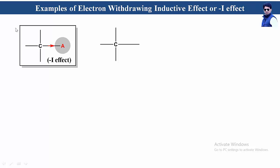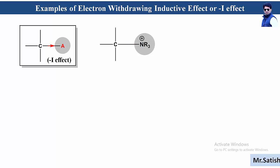This is the general presentation of the electron withdrawing inductive effect or minus I effect. As an example, replacing atom A with NR₃⁺, an ammonium salt, the flow of electrons occurs from carbon towards nitrogen. When this N⁺ withdraws electron density from the carbon atom, the electron density around carbon decreases while around the nitrogen atom it increases. This effect is known as the electron withdrawing inductive effect, and this group is known as an electron withdrawing group.